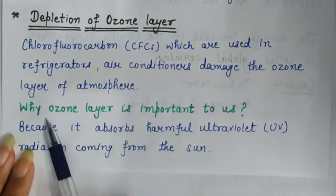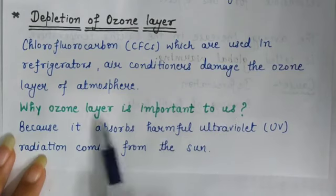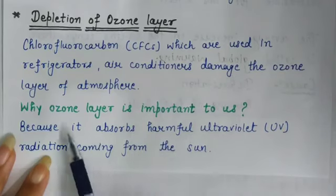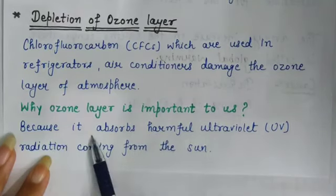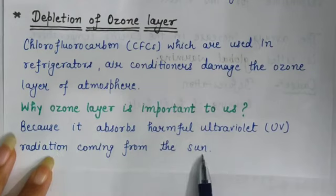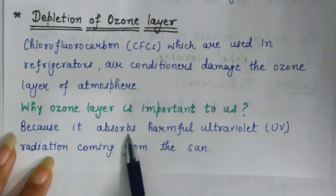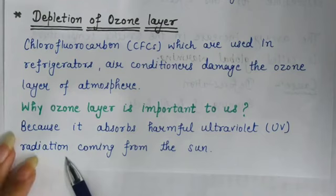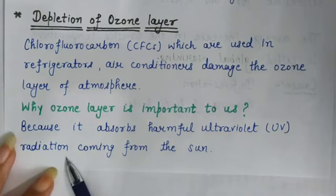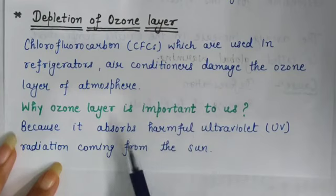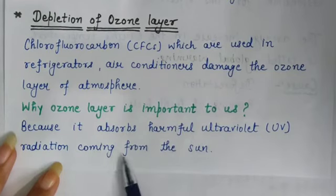Why is the ozone layer important to us? The ozone layer is present in the atmosphere and it is very important because it absorbs harmful ultraviolet or UV radiations coming from the sun. These ultraviolet radiations are harmful for us — they can cause skin cancer and eye problems. The ozone layer absorbs these harmful rays coming from the sun, protecting life on Earth.